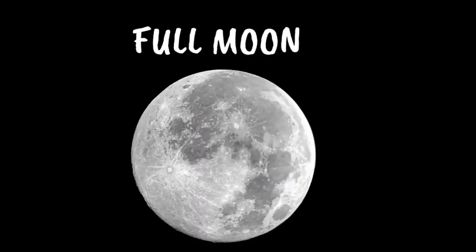Then we have the full moon. This is when the whole moon is brightly shining in the night sky. The full moon phase is when the whole face of the moon is lighted up for all to see, due to the fact that the sun and moon are on opposite sides of the earth. It's like a big round cheese in the sky.